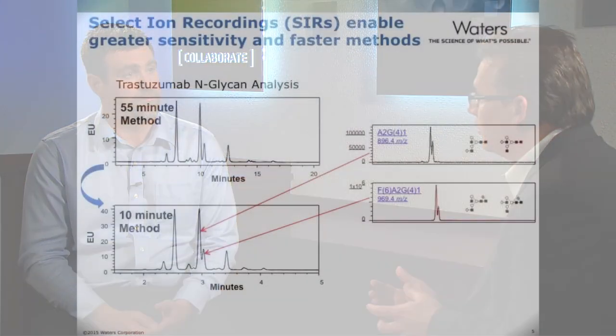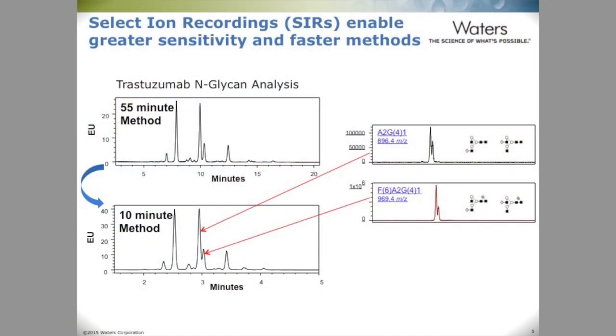The ACQUITY QDA enables a shorter chromatographic method through the ability to collect selected ion chromatograms or selected ion recording. You can look at the mass specifically of one particular glycan — or several glycans — and look at how they're changing differentially within the same process. The addition of mass information gives you the ability to target just those species of interest, so you don't need as much chromatographic resolution because you have the mass data.